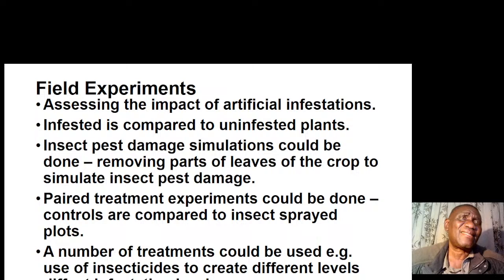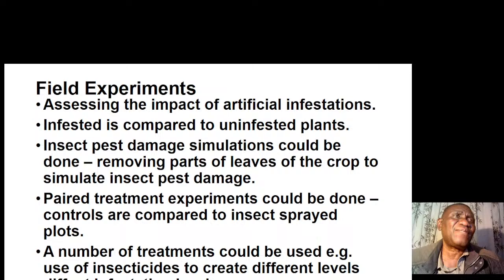Paired treatment experiments can be done — controls compared to insect spray plots — just to see the impact of insects on crops. A number of treatments could be used, such as use of insecticides to create various different levels of infestation.